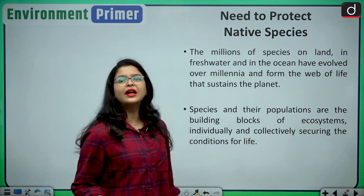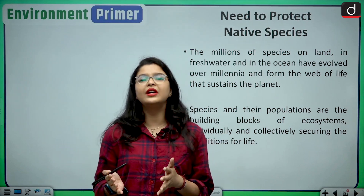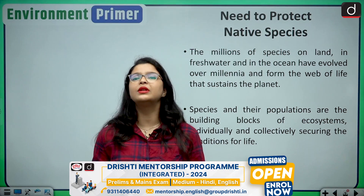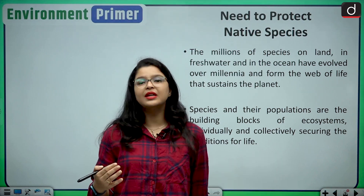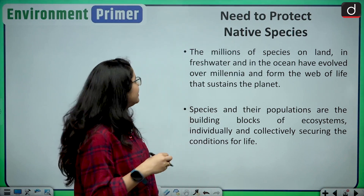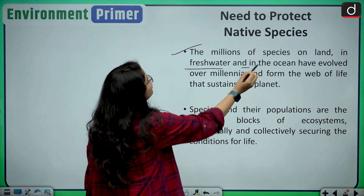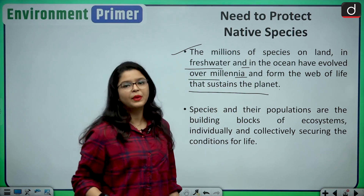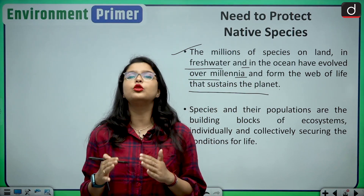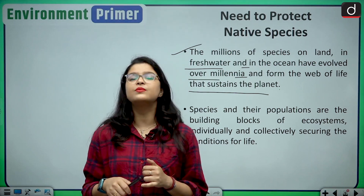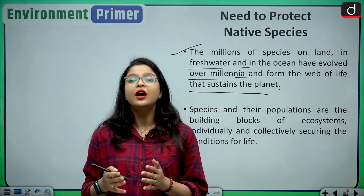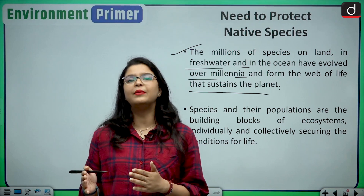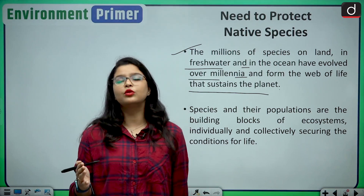Let us understand the need to protect our native species. We already have an established food chain and biodiversity, but we humans are playing with nature and losing our native species at an unprecedented rate. The millions of species on land, in fresh water, and in the ocean have evolved over millennia and form the web of life that sustains the planet. We cannot exist alone on this earth — we are interdependent on each other.